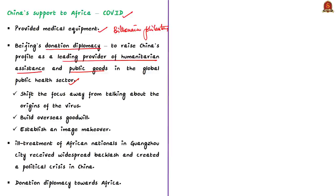This diplomacy aimed to achieve three immediate objectives favoring China: first, shifting the focus away from the origins of the virus — since many countries like America termed it the 'Wuhan virus' or 'China virus'; second, building overseas goodwill; and third, establishing an image makeover, presenting China as a global public health provider at a time when many countries are worried about Chinese investment, diplomacy and military expansionism. According to the authors, China almost succeeded in achieving these objectives.